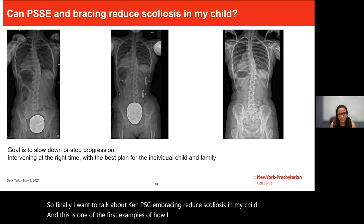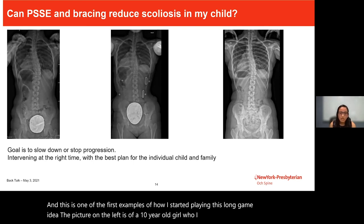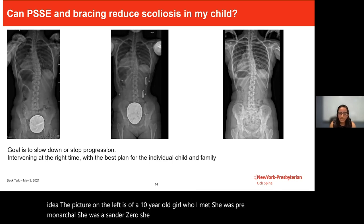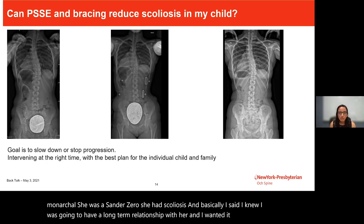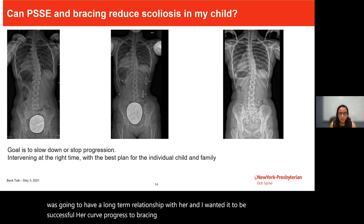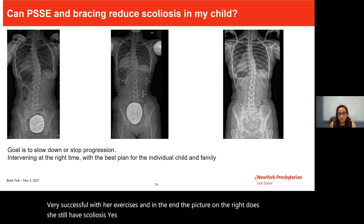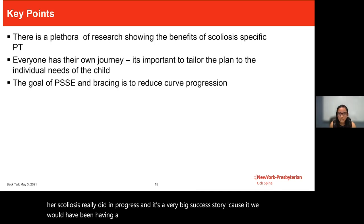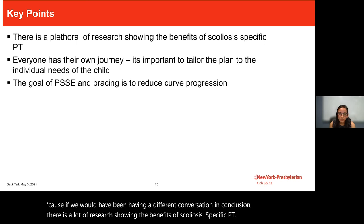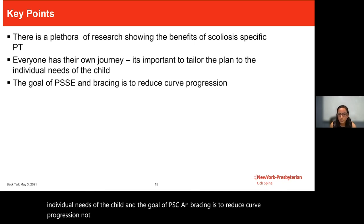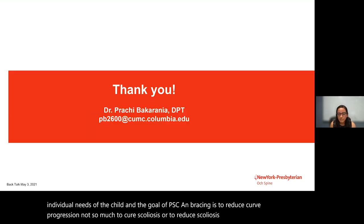It's a tailored plan depending on where they are in growth, what resources they have at home, their motivation, and flexibility. As an example, I met a 10-year-old pre-menarchal Sanders-zero girl. I knew I was going to have a long-term relationship with her. Her curve progressed to bracing range; I was very slow with it, seeing her maybe once a month. She was very successful in the brace and with her exercises. Despite becoming physically mature, her scoliosis really didn't progress — a very big success story. In conclusion, the goal of PSSE and bracing is to reduce curve progression, not necessarily to cure or reduce curves.